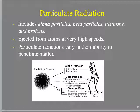Let's talk about particulate sources. I'm talking about alpha particles, beta particles, neutrons, and protons. Each one is significant, each contributes to dose in different ways, and each requires different levels and methods of protection. For the most part, these are ejected from atoms at very high speeds, particularly if atoms are undergoing radioactive decay.